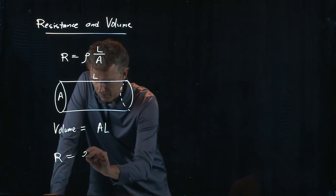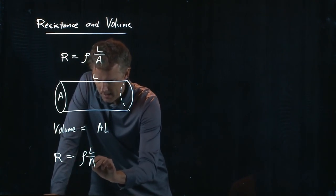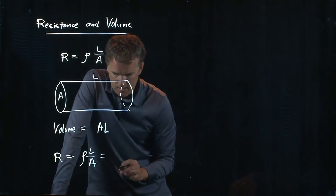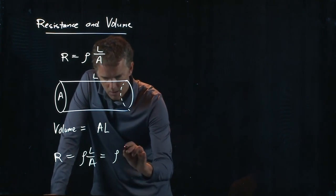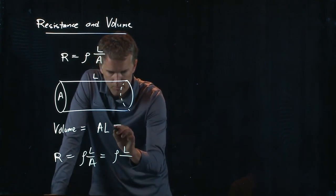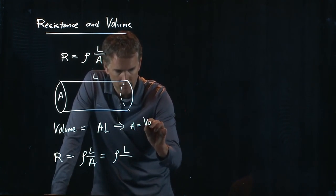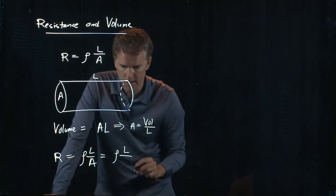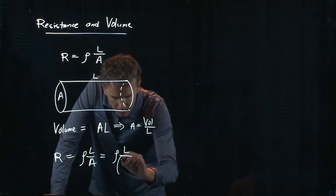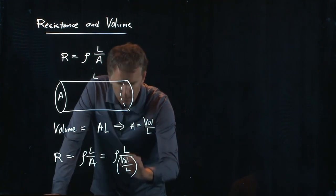Resistance, we said, was rho L over A. And I can say this is rho L over—what if I just solve this for A? I got A equals volume over L. So let's put that right here, volume over L.